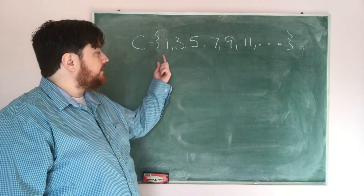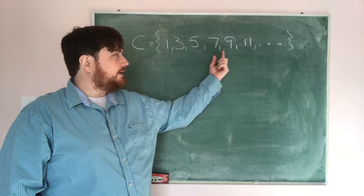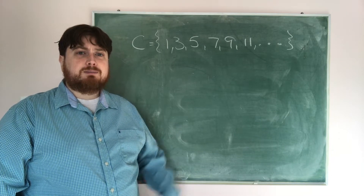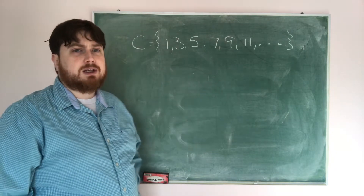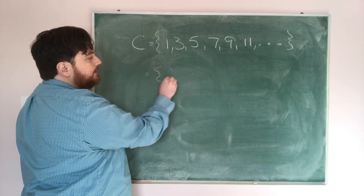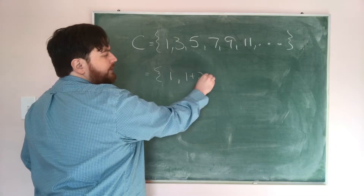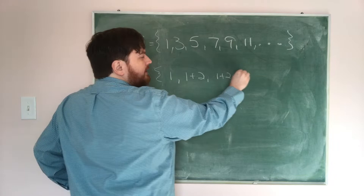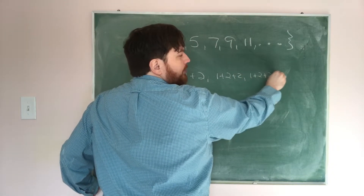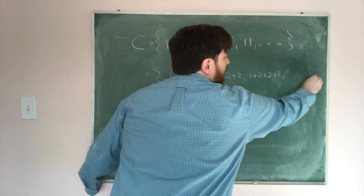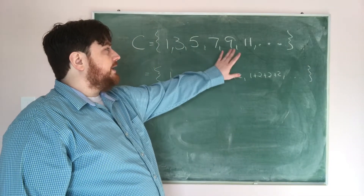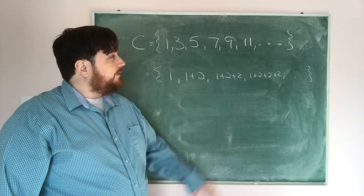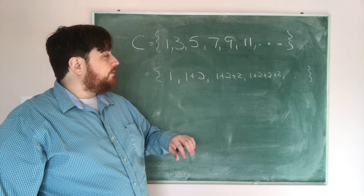Notice that I can get from 1 to 3, and 3 to 5, and 5 to 7, and 7 to 9 — each time I'm adding 2. So that pattern pops out: I'm adding 2 each time. I'm going to rewrite this as 1, then 1 plus 2, then 1 plus 2 plus 2, then 1 plus 2 plus 2 plus 2, and continue that on to eventually get 9, 11, 13, 15, 17, and so on.